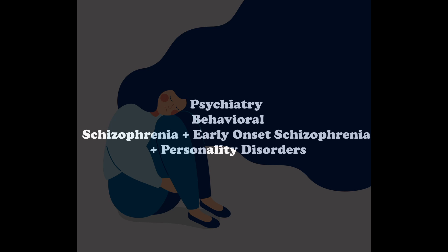Now, let's talk about what happens if a patient has these symptoms but they're under the age of 18. This is called early-onset schizophrenia, and it's associated with a much more severe course of illness.